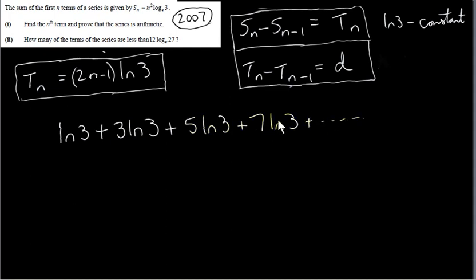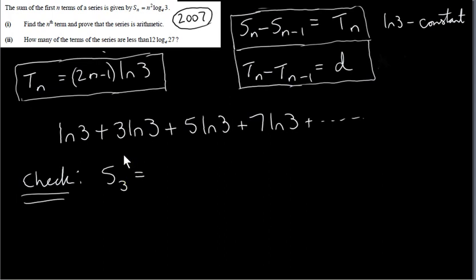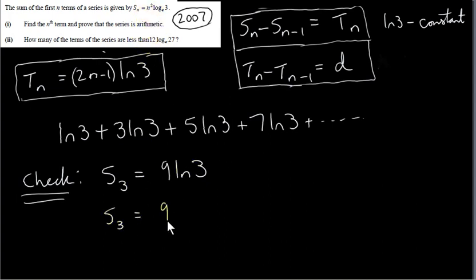As a quick check, let's compute S₃ by adding the first three terms: ln3 + 3·ln3 + 5·ln3 = 9·ln3. Now using the formula: S₃ = 3²·ln3 = 9·ln3. It checks out.